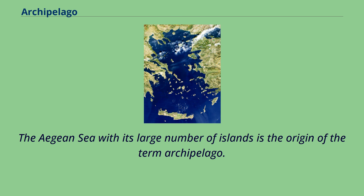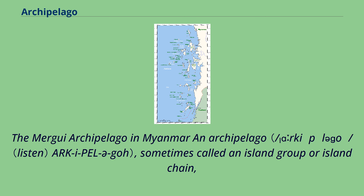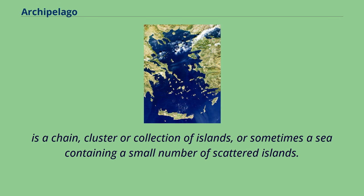The Aegean Sea, with its large number of islands, is the origin of the term archipelago. An archipelago, sometimes called an island group or island chain, is a chain, cluster, or collection of islands, or sometimes a sea containing a small number of scattered islands.